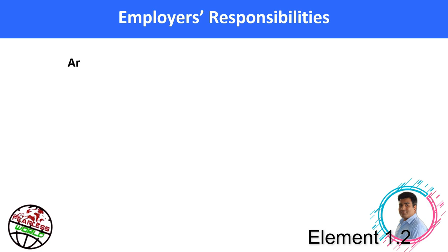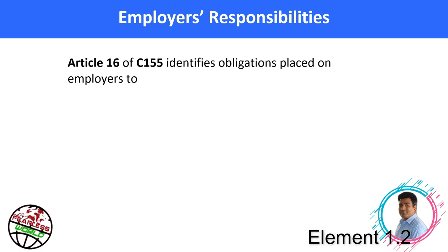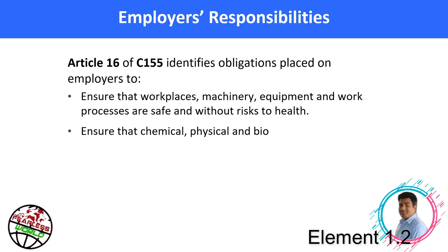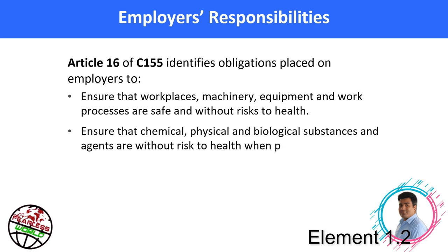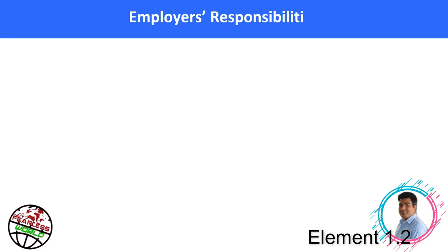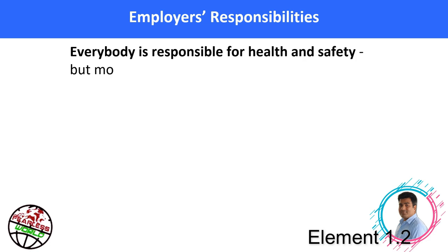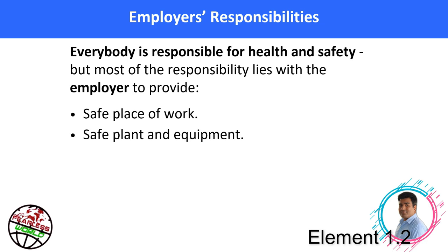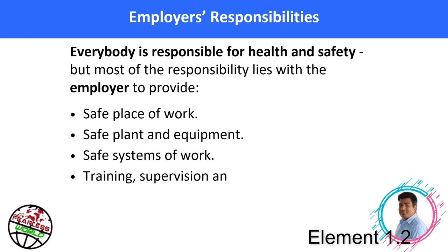As per ILO Convention C-155, Article 16 identifies obligations placed on employers. These are: ensure that workplaces, machinery, equipment and work processes are safe and without risks to health; ensure that chemical, physical and biological substances and agents are without risks to health when protective measures have been taken; and provide adequate protective clothing and equipment to prevent risks of accidents or adverse health effects. Everybody is responsible for health and safety, but most of the responsibility lies with the employer.